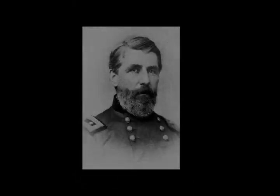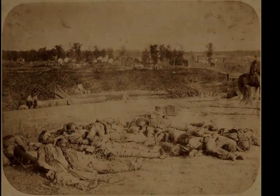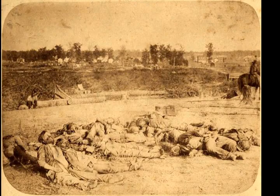After the Battle of Iuka, Major General Sterling Price marched his army to meet with Van Dorn's. The combined force, known as the Army of West Tennessee, was put under the command of the more senior Van Dorn. The army moved in the direction of Corinth, a critical rail junction in northern Mississippi, hoping to disrupt Union lines of communications and then sweep into Middle Tennessee.